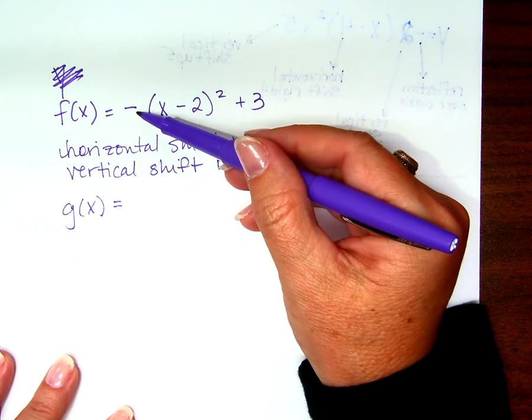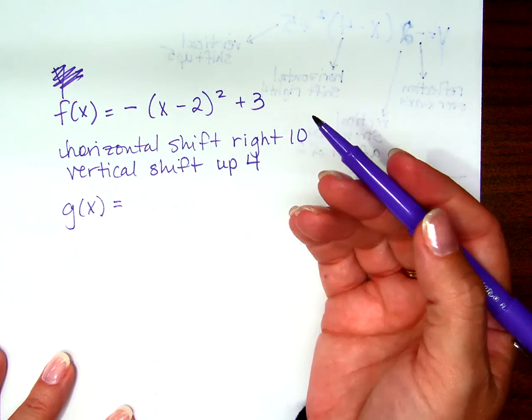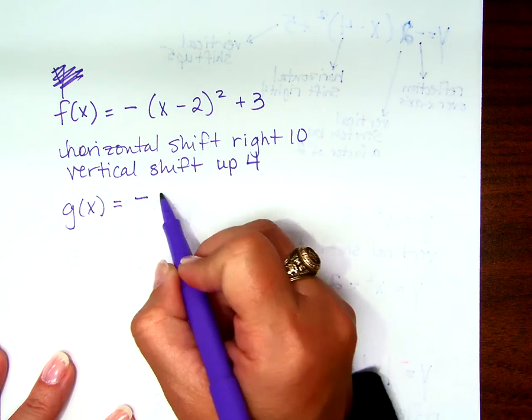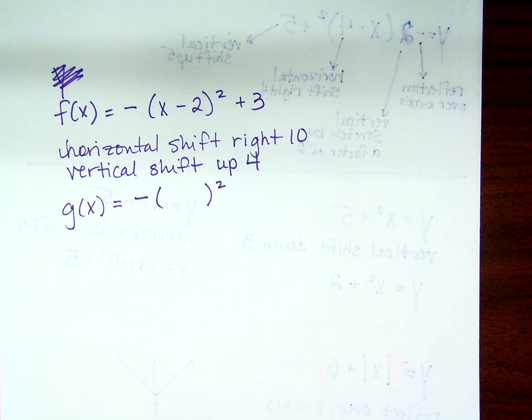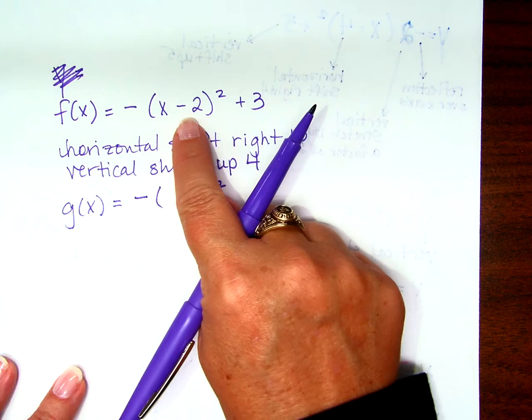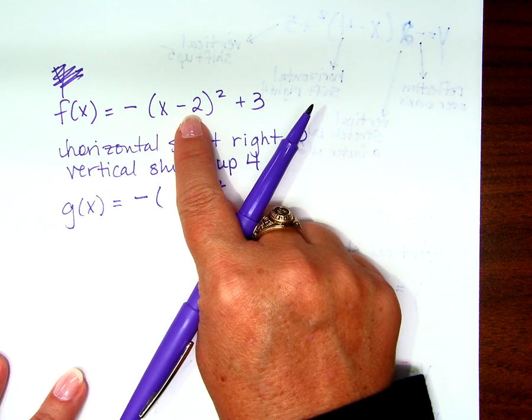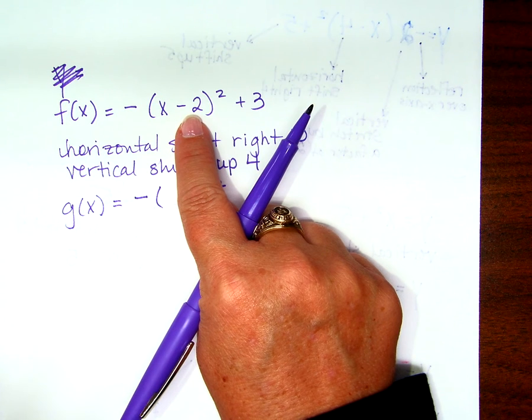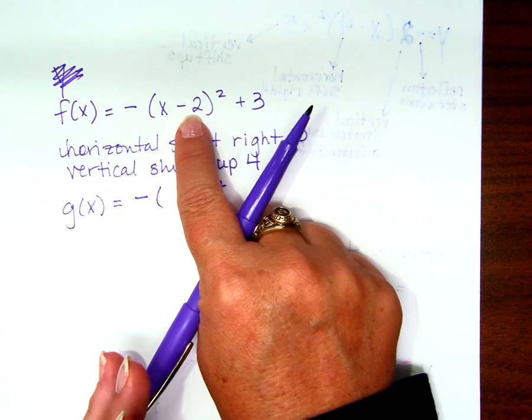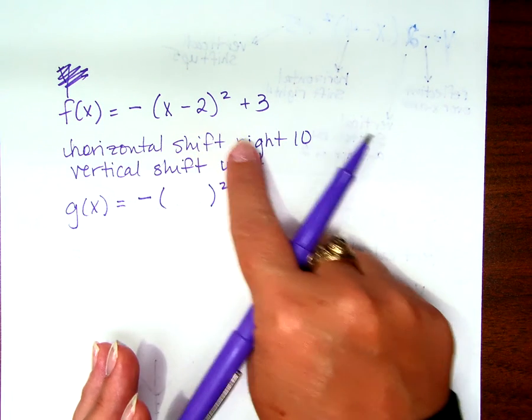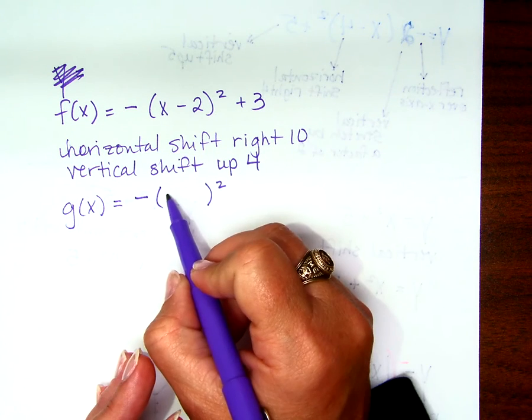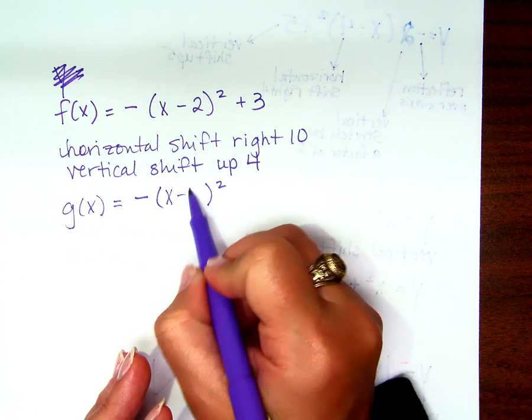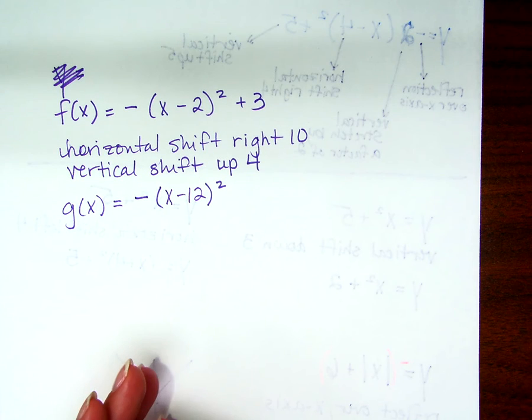Does it stay reflected? Yeah, because I didn't do anything with that, right? So that stays. What happens inside? Where was it already? It was already to the right 2, right? And if I want to move it to the right 10 more, minus 10 more, right? So x minus 12. That's all right. I know what you were thinking. That's okay. But it was already 2 over.